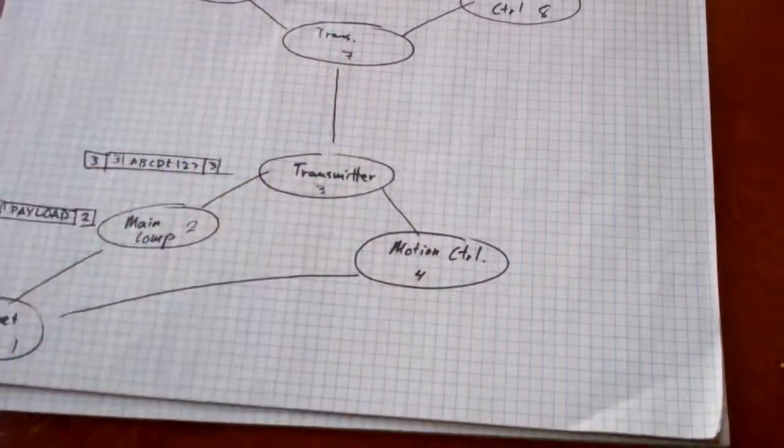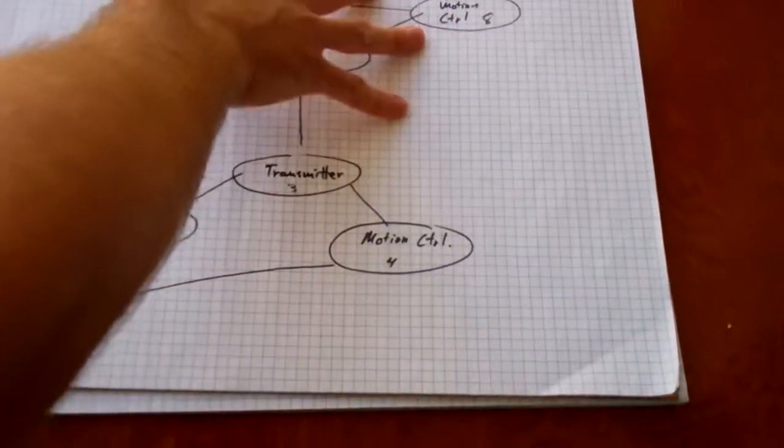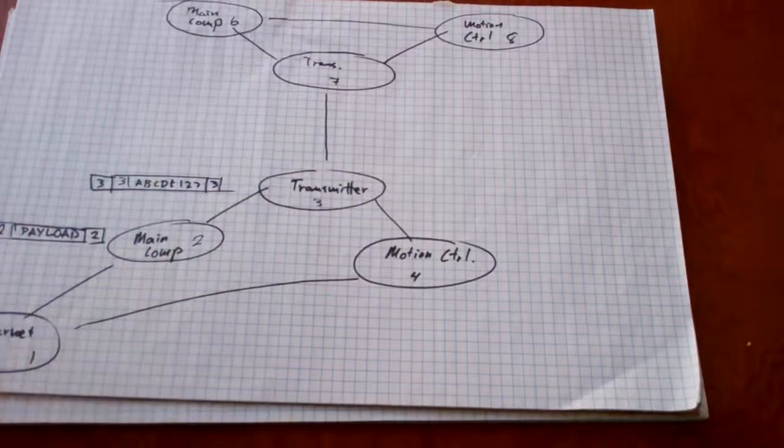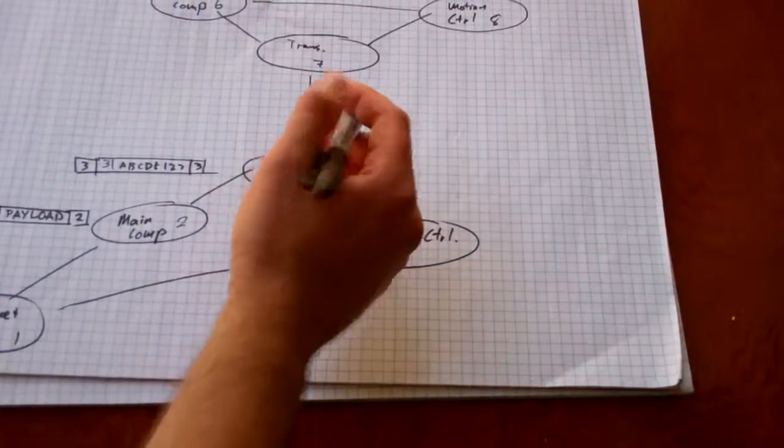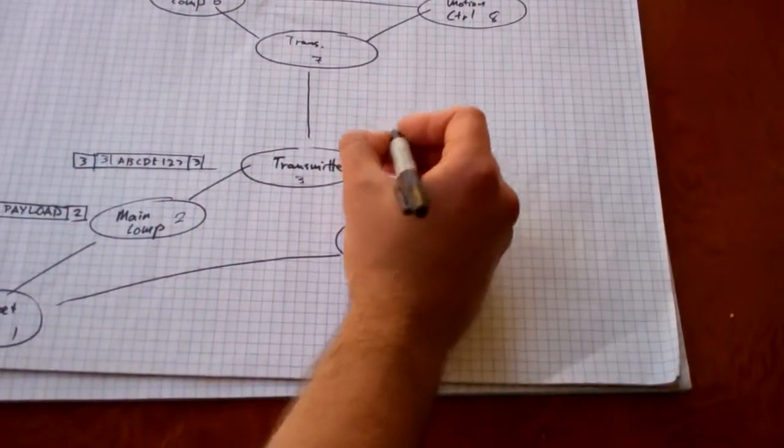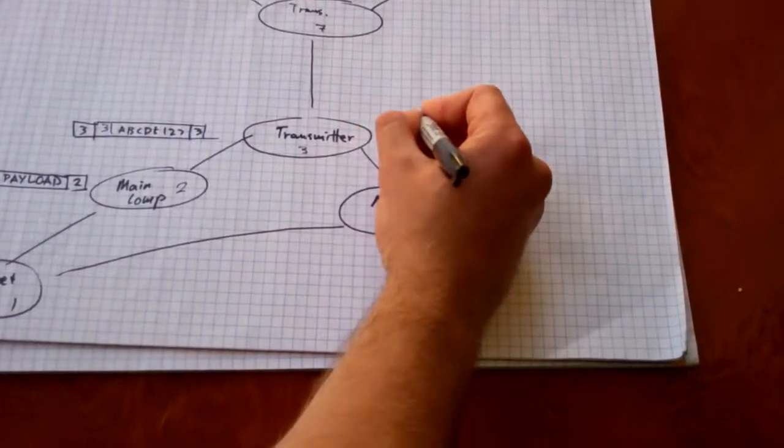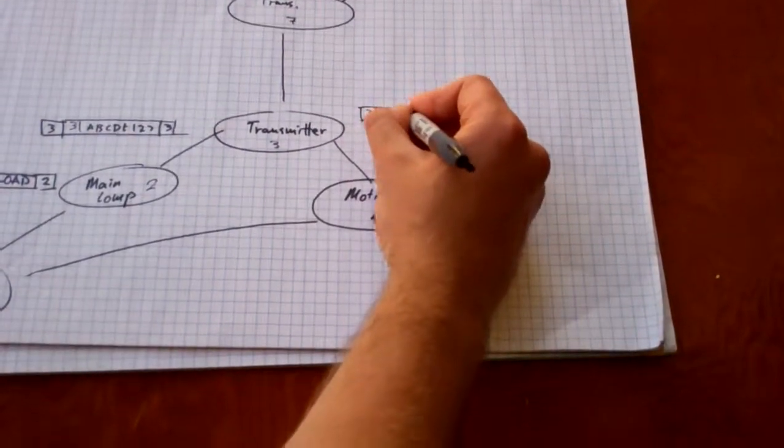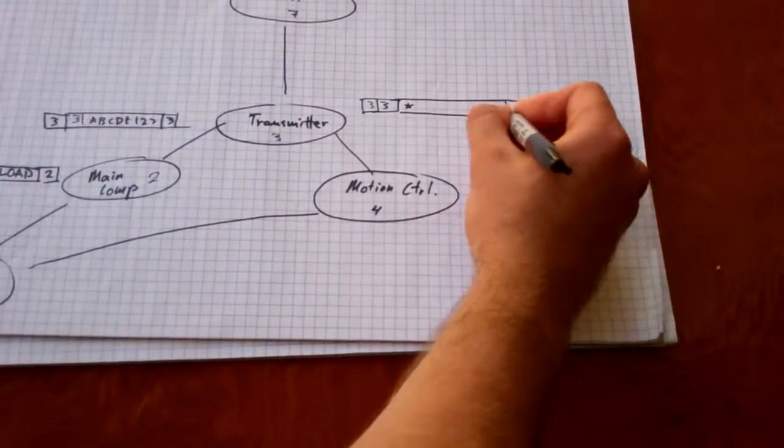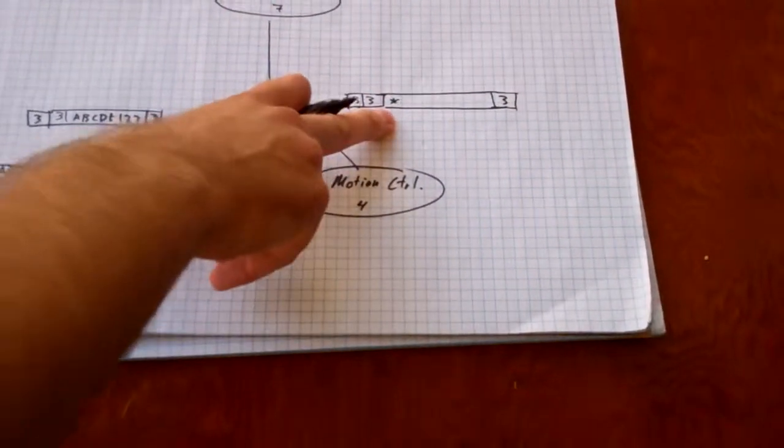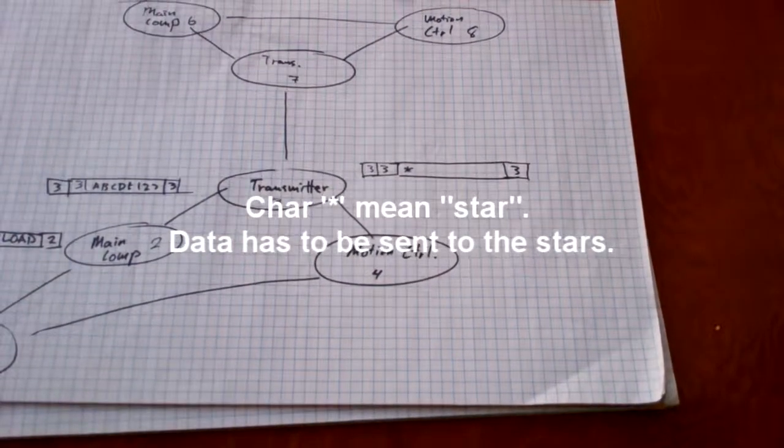But when we are ready to communicate between our CubeSat with the ground station, what we will do is we'll get a packet ready. And let's say we're sending 3. So this is our two prefixes. Once we see a star, like that, once we see a star, that's our trigger to communicate with our CubeSat.